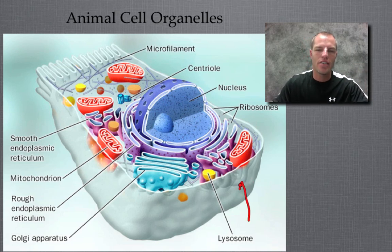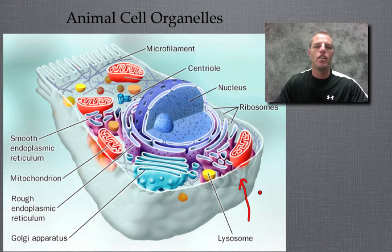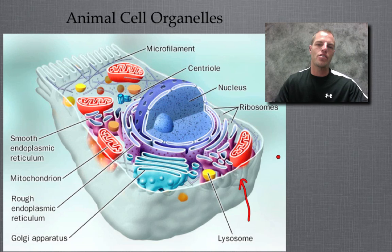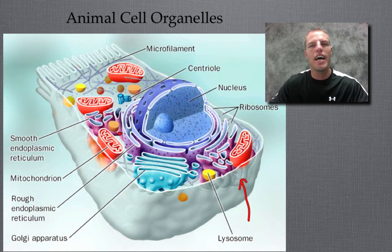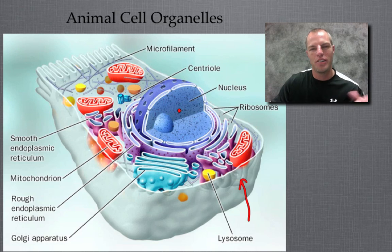Starting on the outside, this outer edge is called the cell membrane, sometimes called the plasma membrane. Its job is to regulate what can go in and out of the cell and to separate the internal environment from the exterior. All the space between the nucleus and the cell membrane is called cytoplasm, sometimes called cytosol — a jelly-like substance that suspends and holds the organelles and gives structure to the inside of the cell.